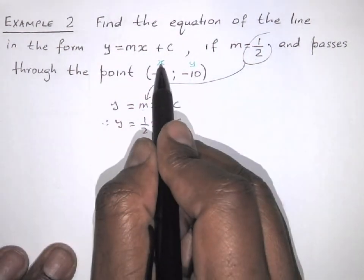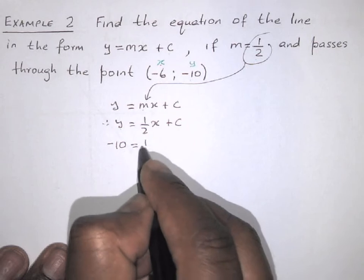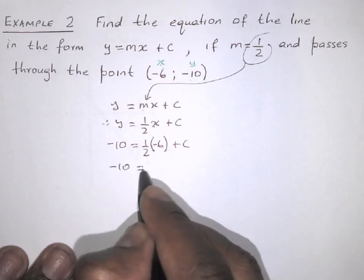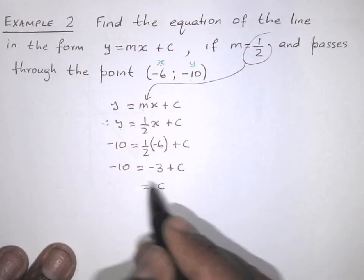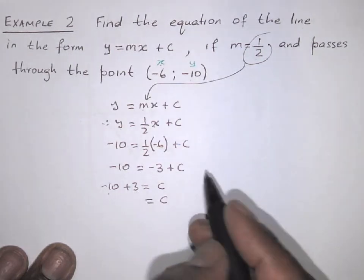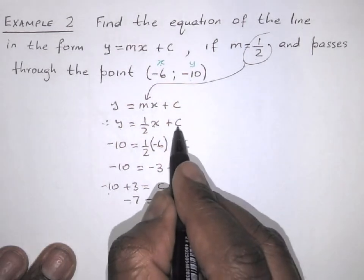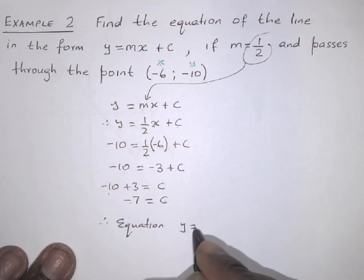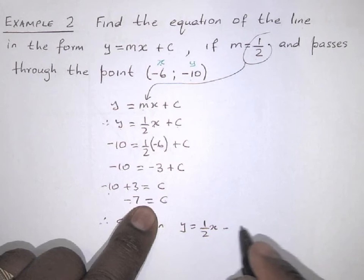Let's put it in. The x-value is minus 6 and the y-value is minus 10. So minus 10 is equal to one half times x, where x is minus 6, then plus c. Minus 10 is equal to half of minus 6, which is minus 3, then plus c. Which means c is equal to minus 10, take minus 3 across — it becomes plus 3. So c is equal to minus 10 plus 3, which is equal to minus 7. Therefore, the equation is y is equal to half x minus 7. Done.